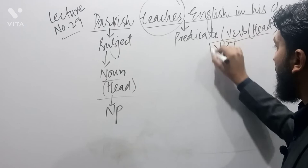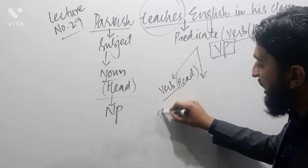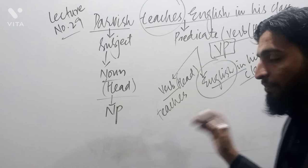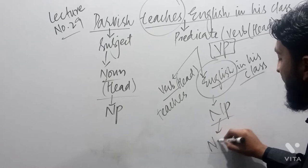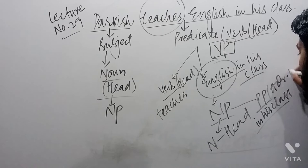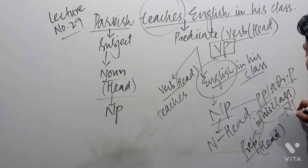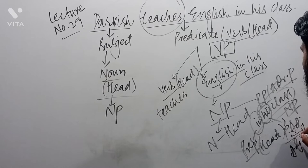The verb phrase is further divided: 'teaches' is the verb head, and 'English in his class' is a noun phrase because 'English' is a noun and serves as head. 'In his class' is a prepositional phrase — also called an adverbial phrase since it indicates location. 'In' is the preposition functioning as head, while 'his class' is a dependent noun phrase. 'His' is a possessive adjective, also called a determiner or adjective phrase.